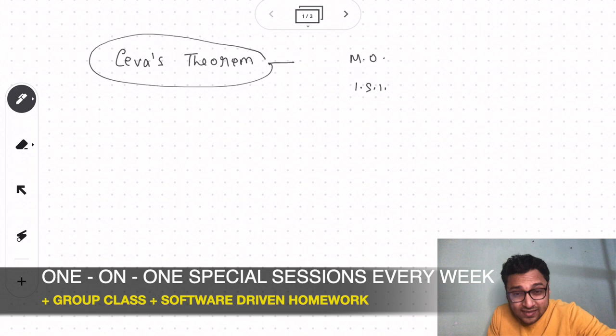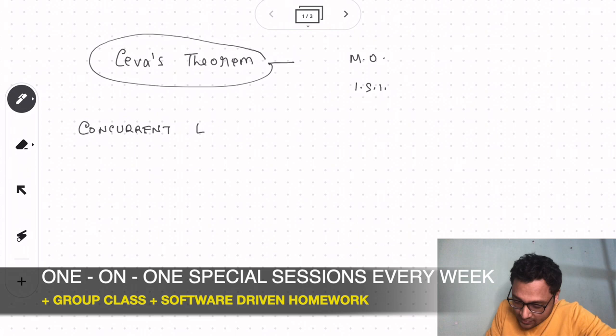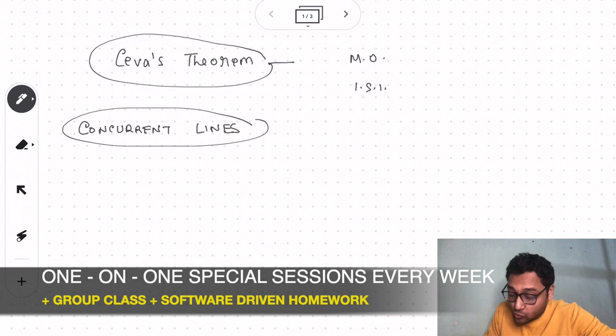So what is this theorem all about? It tells us something about concurrent lines. So let me write that: concurrent lines. What do I mean by concurrent lines? Well, if I have two lines which are not parallel to each other, those two lines will definitely intersect at a point. But what about a third line? What happens then?